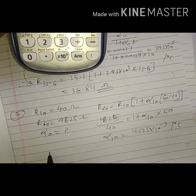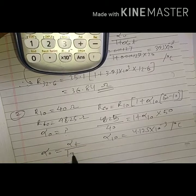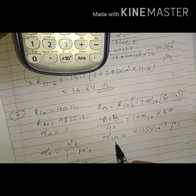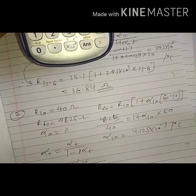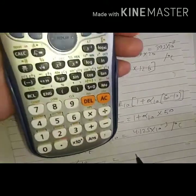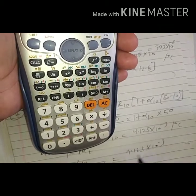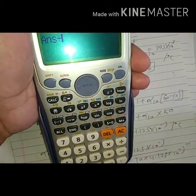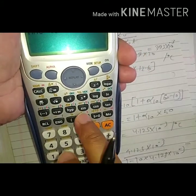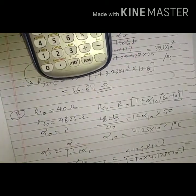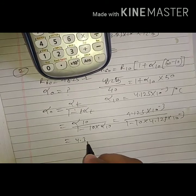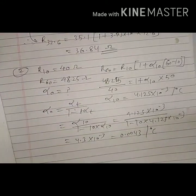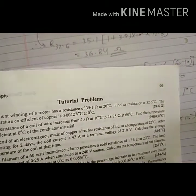Using the formula α₀ = αT / (1 − T × αT), where αT = α₁₀ = 4.125 × 10⁻³ and T = 10: α₀ = 4.125 × 10⁻³ / (1 − 10 × 4.125 × 10⁻³) = 0.0043 per degree Celsius. The answer is correct. Let us go to the next numerical.